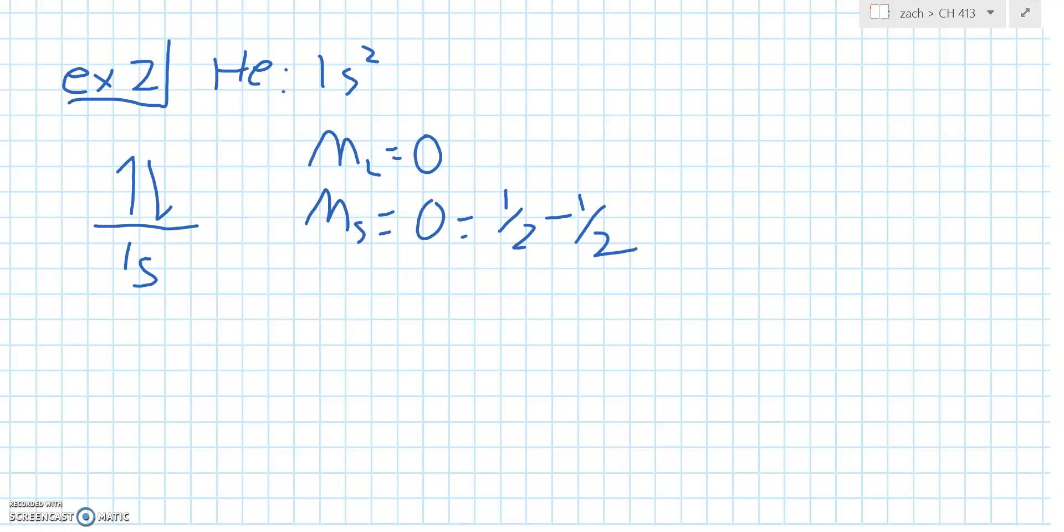Then we see that L is forced to be 0, and S is forced to be 0, which forces J to be 0. So if we use the term symbol formula 2S+1, L, J, this forces the term symbol for helium for the ground state to be 1S0, or singlet S.